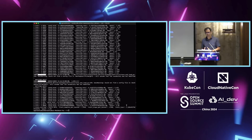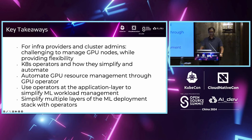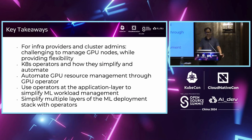This demo showcases two operators together, but you can leverage many other operators for similar workflows — it's quite customizable. The key takeaways are: from an infra provider and cluster admin perspective, managing GPU nodes while providing flexibility is very complex. Kubernetes operators are a great way to simplify and automate processes related to your workloads. You can automate GPU resource management through the GPU operator, and operators can also be used at the application layer to simplify ML workload management. Multiple layers of the ML deployment stack can be simplified through corresponding operators. We hope you've learned new techniques and are encouraged to use operators to simplify your AI infrastructure. Thank you.